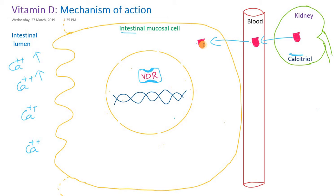Calcitriol binds to the vitamin D receptor (VDR) present in the nucleus of the intestinal mucosal cell. This forms a hormone-receptor complex, also called a hormone responsive element. This complex also binds to another protein called RxR — the retinoic acid X receptor — and they form a heterodimer. This heterodimer acts as a transcription factor.